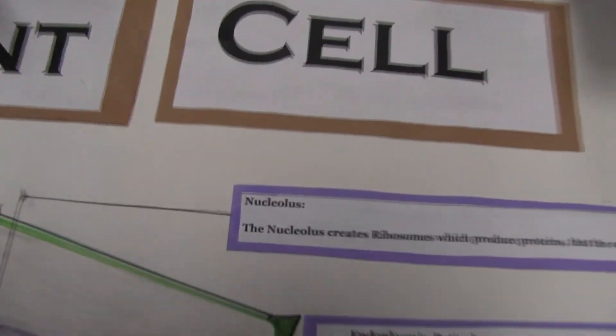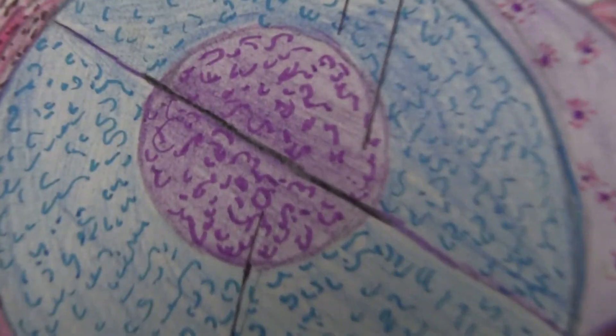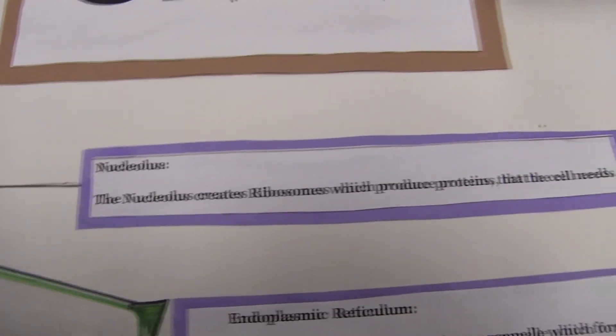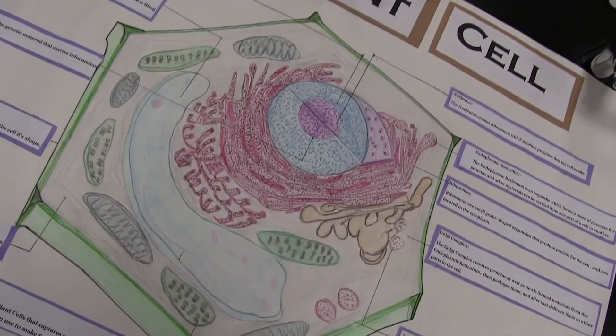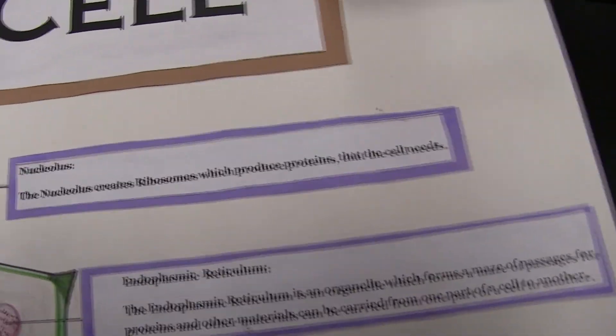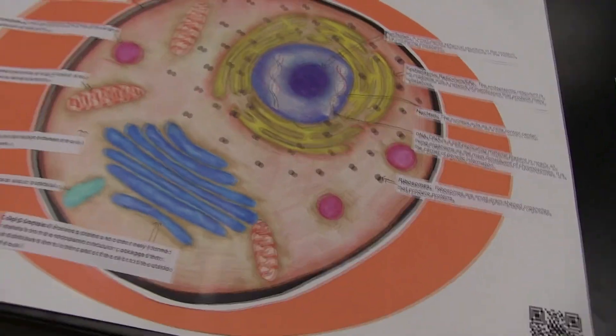You also have to label each part. For example, this person made the nucleolus and then has a label coming out of it with a definition. So you have to do three things: make it yourself, label each of the parts of the cell, and write a definition for each. You can use your book definitions — that's fine — or put them in your own words, even better.